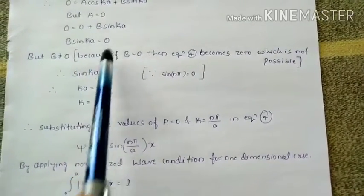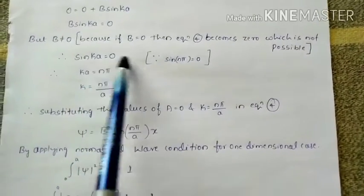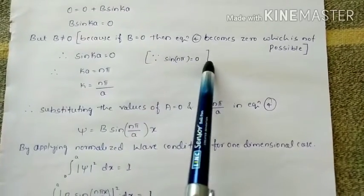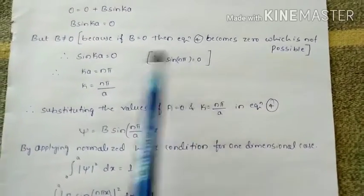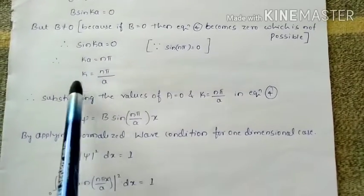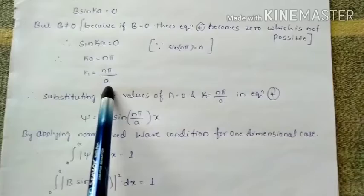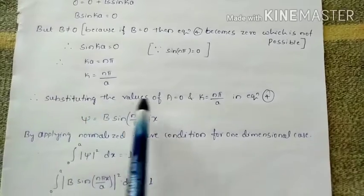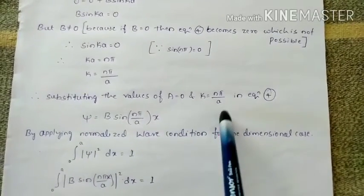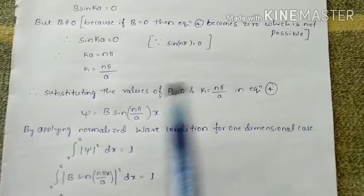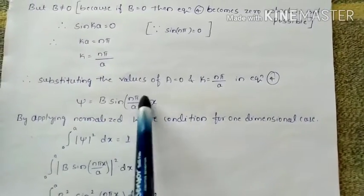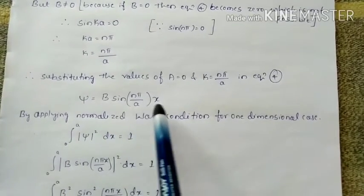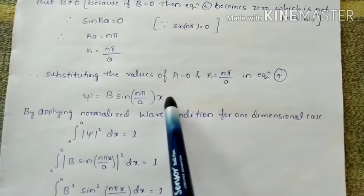Therefore we set sin(Ka) equals 0, which means Ka equals nπ, since sin(nπ) equals 0. This gives k equals nπ divided by A. Substituting the values of A equals 0 and k equals nπ/A into the wave function equation, we get psi equals B sin(nπX/A). This is the wave function.